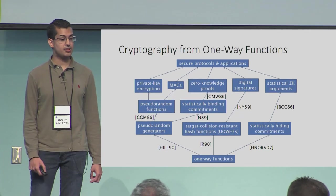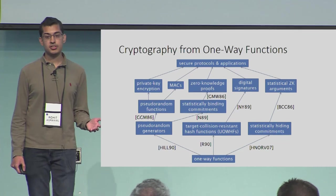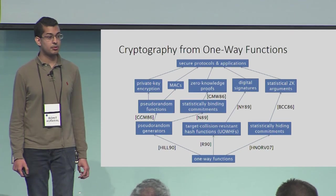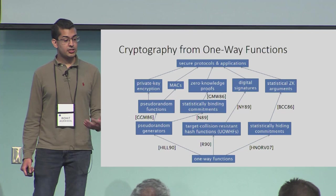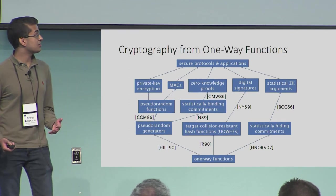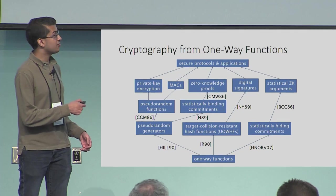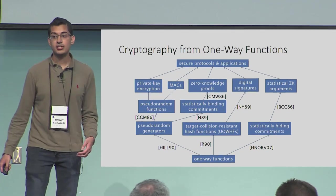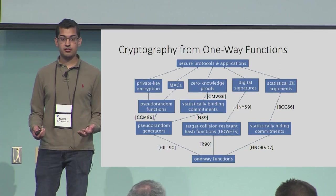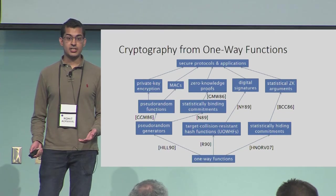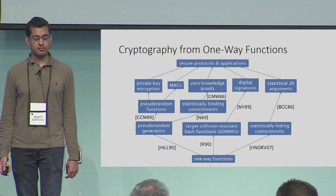A recent line of work has been dedicated to trying to get simpler, more efficient constructions of these basic, more structured primitives. Along the way, it's shown surprising similarities behind the constructions and the analyses of these seemingly very different primitives. And it's raised the very intriguing possibility that there may be a way to formally unify the constructions or the analyses. But so far, this dream is still far out of reach.